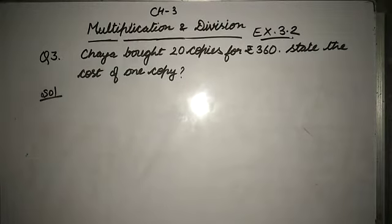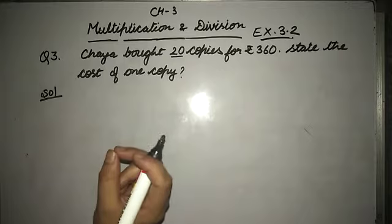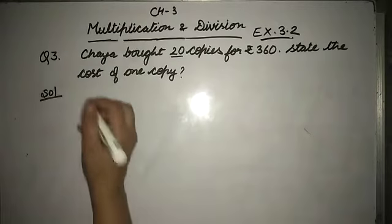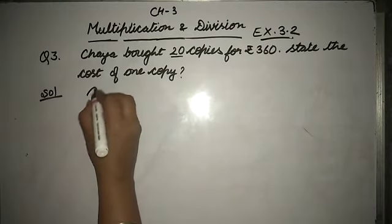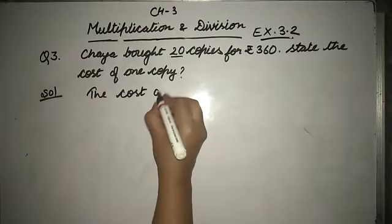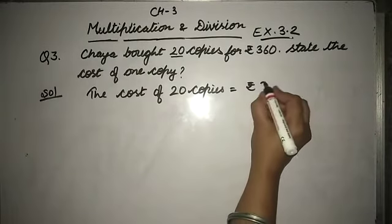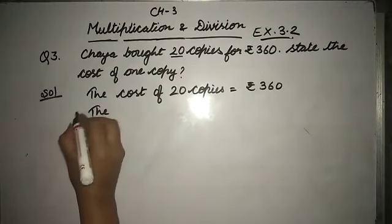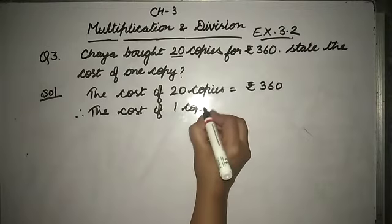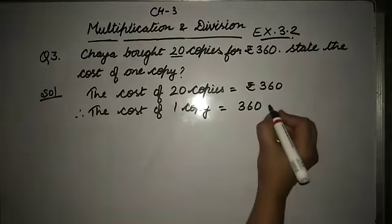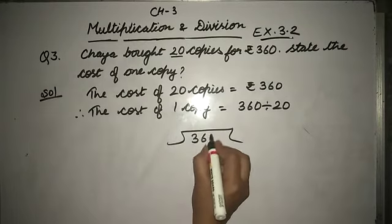We need to know one copy. When we have one copy or one item's cost, we can divide. Always remember this thing. So start writing: the cost of 20 copies equals Rs.360. The cost of 1 copy equals 360 divided by 20. We will divide 360 by 20. Understood?